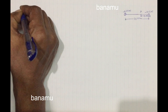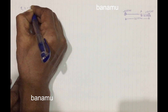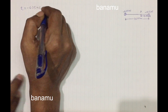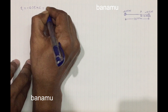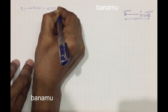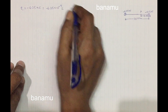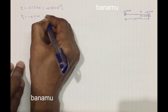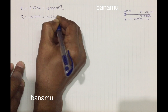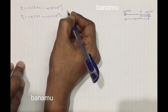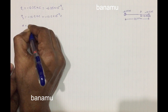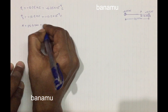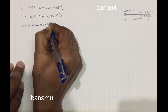Let us take charge Q1 equal to minus 6.25 nanocoulombs, that is equal to minus 6.25 × 10⁻⁹ coulombs. And another charge Q2 is equal to minus 12.5 nanocoulombs, that is equal to minus 12.5 × 10⁻⁹ coulombs. The distance between the two charges d is equal to 25 cm, which equals 0.25 meters.